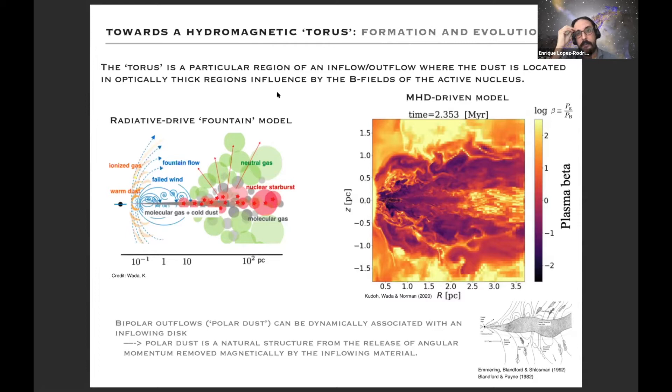I think this MHD driving model gives you a natural explanation, and then the torus is just basically the interface between the inner part of the accretion disk and the inflowing material from the host galaxy.